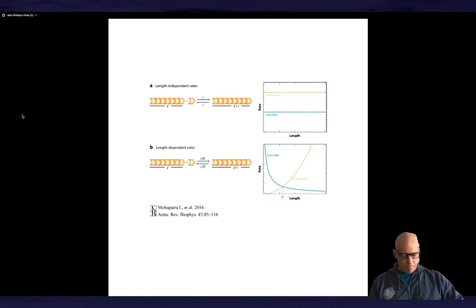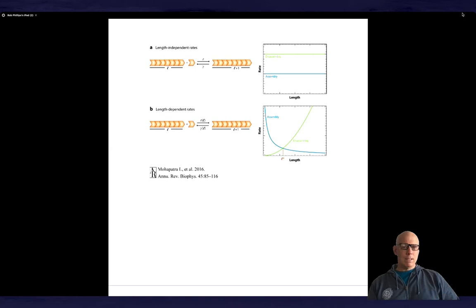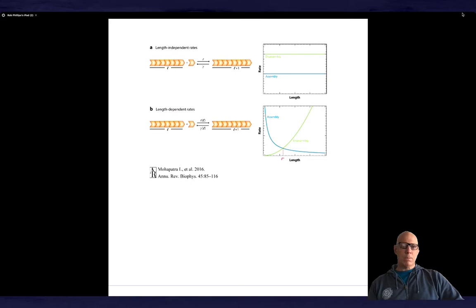On the other hand, in the bottom image, what you see is a very general case where you have both a length dependent assembly and disassembly rate. And that's interesting because what that implies is that there's going to be a critical length at which those two things balance each other. And so the microtubule or the actin or whatever will be stabilized at that particular length. This kind of a model will give rise in the most naive interpretation to an exponential distribution of lengths, which is fun and interesting to think about.